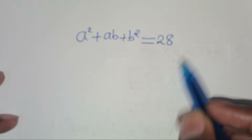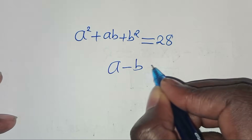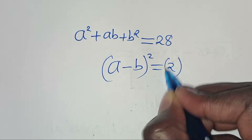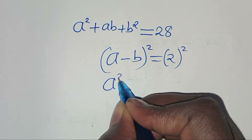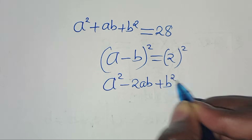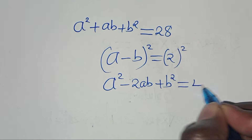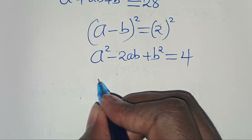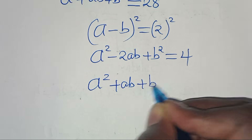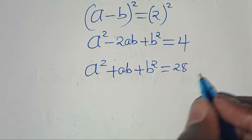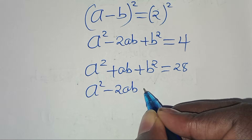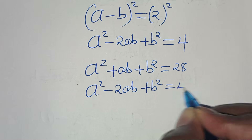From equation 1, a minus b equals 2. Squaring both sides gives us a squared minus 2ab plus b squared equals 4. So we now have two equations: a squared plus ab plus b squared equals 28, and a squared minus 2ab plus b squared equals 4.